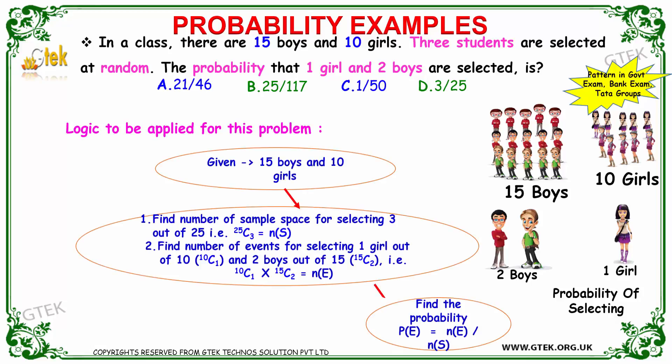Now let's see the problem with the classroom. We've got 15 boys and 10 girls. Three students are selected at random, so the keyword 'random' is really important. The probability that one girl and two boys are selected is - these are the options. We've got 15 boys and 10 girls. I need to pick only two boys and one girl, so I need to find the probability.